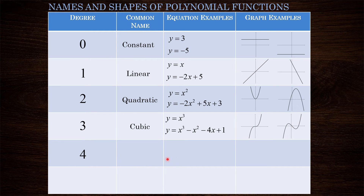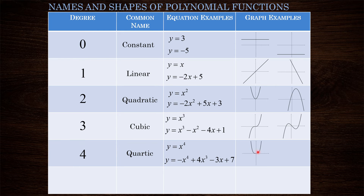Moving on to degree four, these functions are called quartic functions. The most basic quartic function is y equals x to the power of four, but you can also have other terms where the highest exponent on x is four. The graph of y equals x to the fourth again reminds us of y equals x squared, but with a slightly different shape — increasing more rapidly on the ends and flatter around the origin. A more complex quartic like y equals negative x to the fourth plus four x cubed minus three x plus seven shows a lot more curves and peaks.